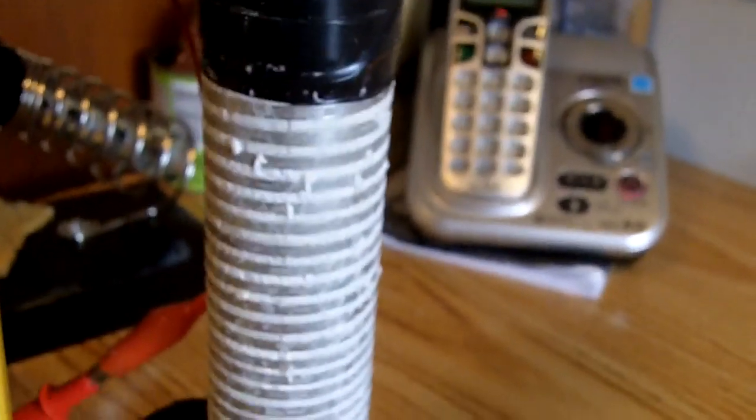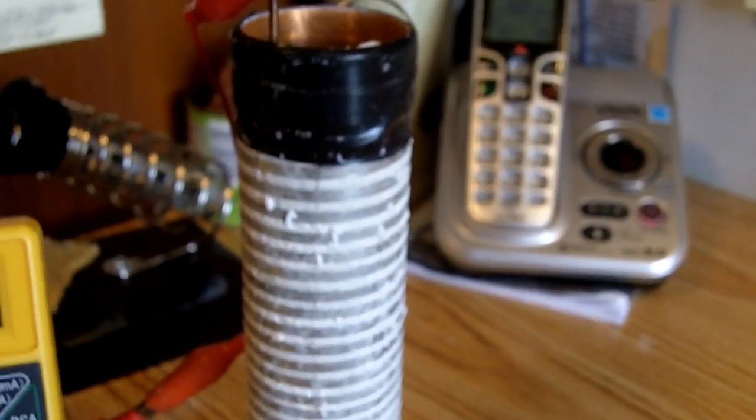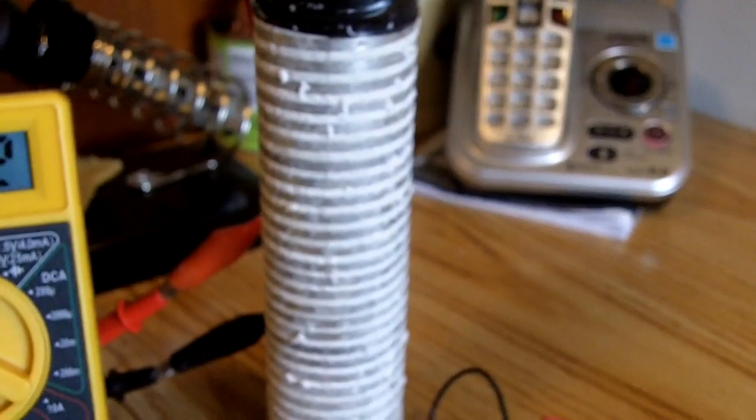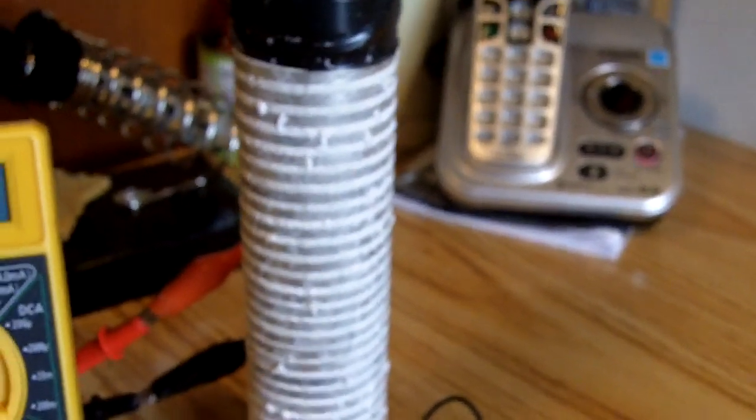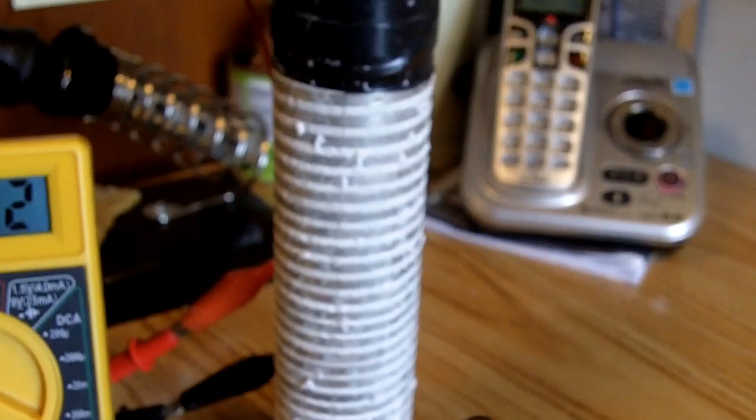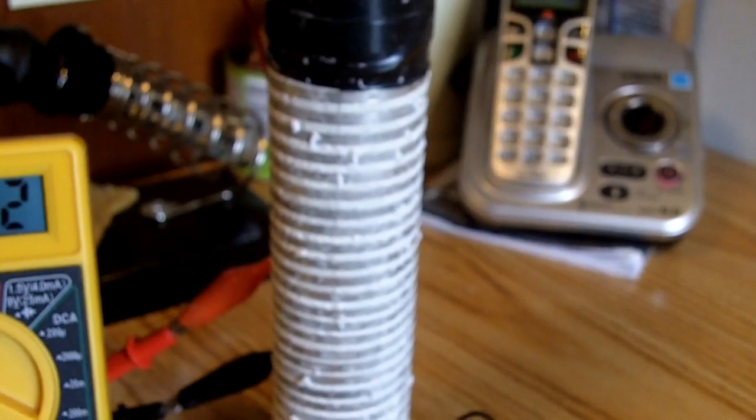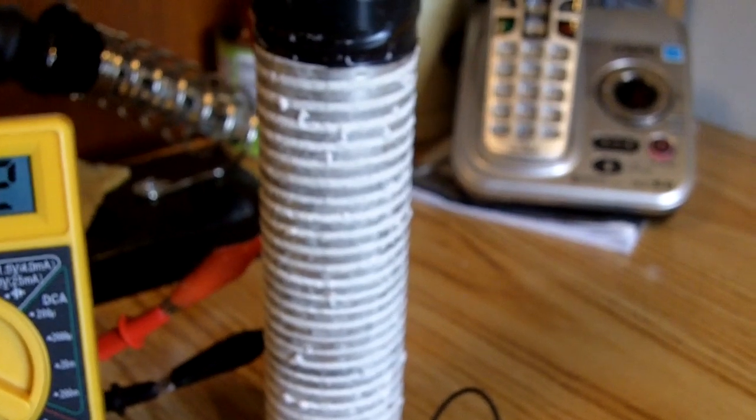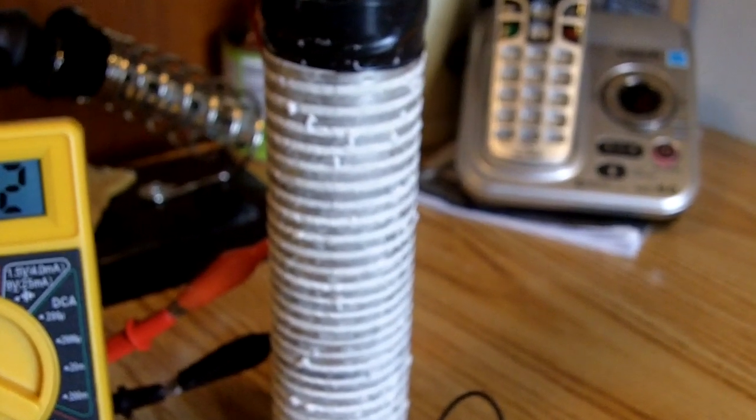On this one here, I cleaned that copper pipe up good and everything. When I first wet it down and first wrapped it, I had real good voltage. I had about 1.7 volts and a bunch of milliamps. But I decided I'd let it dry, and after it dried for a day or so, the voltage dropped way off.